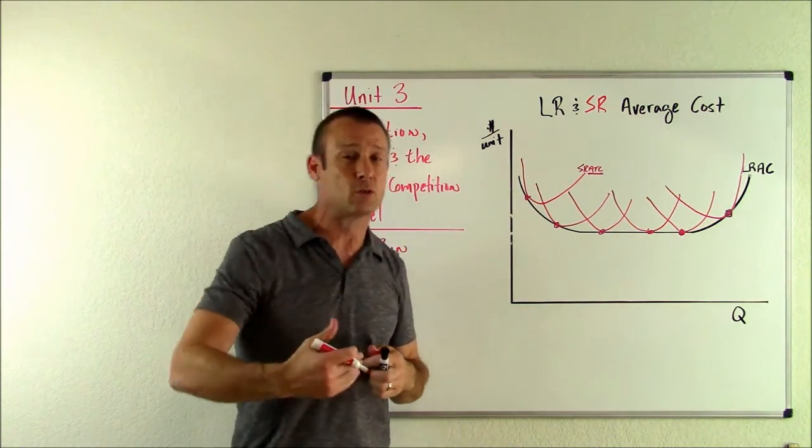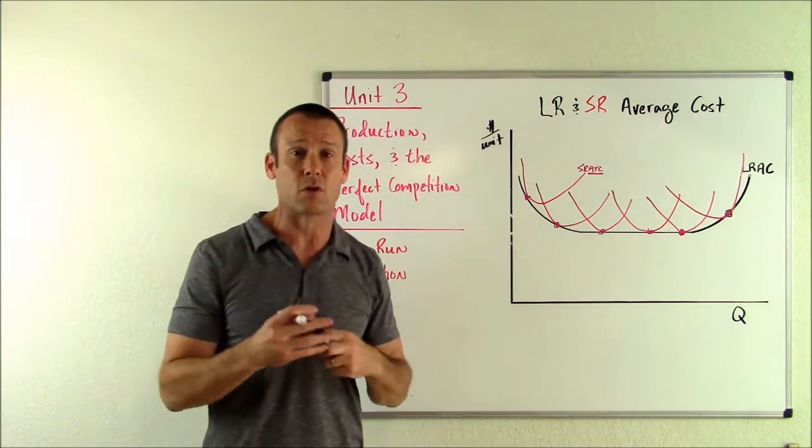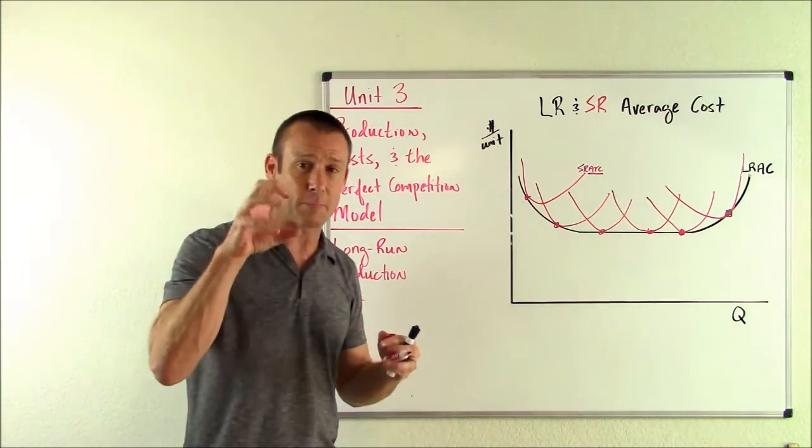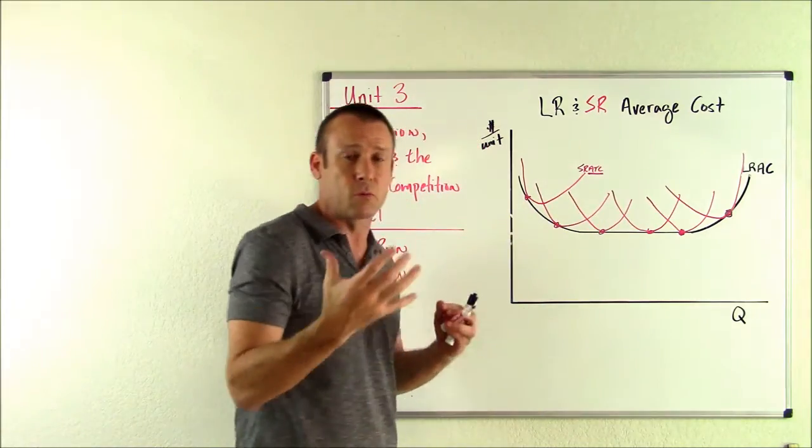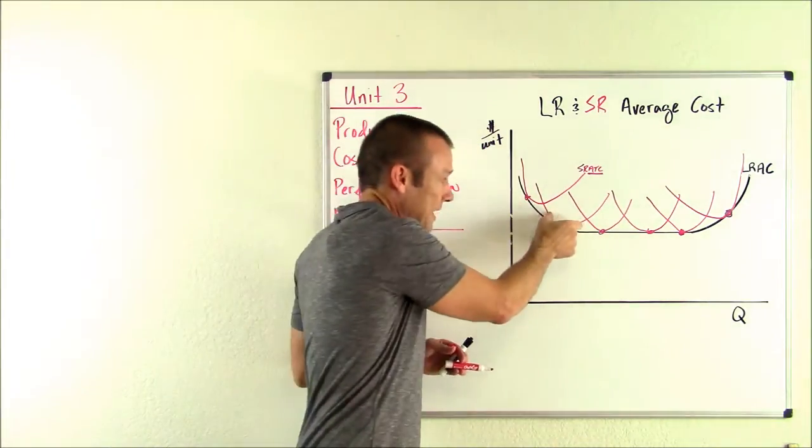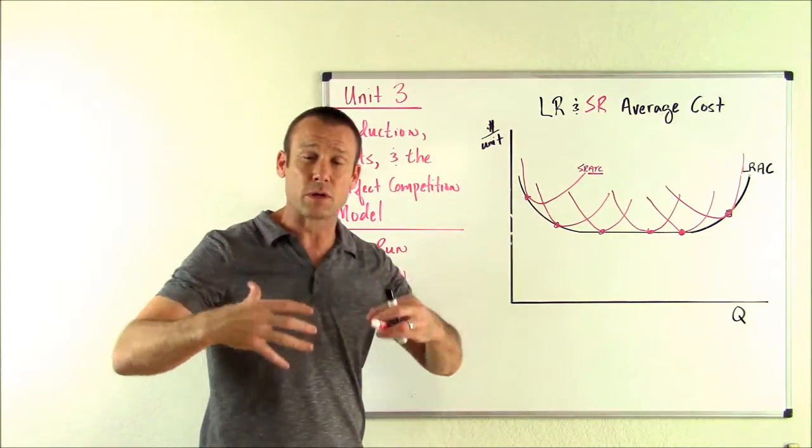So anytime that we're actually doing analysis in this class and we're doing short run analysis, it's like we're at a snapshot. We got, oh, that's where we're at. Our plant size is a certain size. And so that's the curve we're with right now. Or maybe that's the curve. So that's what we're doing oftentimes.